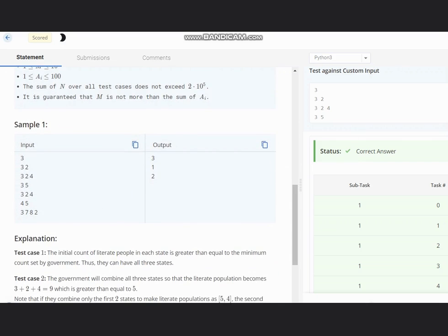So in first test case what we have is 3 and 2. So in case of 3 and 2, 3 is the n which represents the total number of states and 2 is m the minimum number of literate people required in each state.